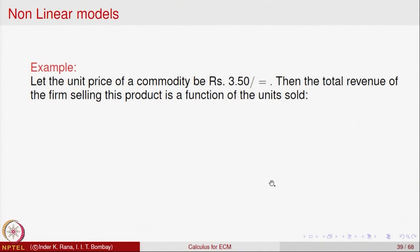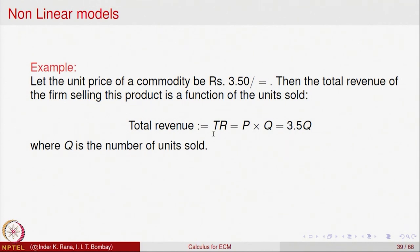Let us now look at some non-linear models. Until now we have looked at very simple models of price and demand. Consider a commodity with price per unit of 3.50. If q units are sold, the total revenue of the firm is a function of units sold. Since price per unit is fixed at 3.50, total revenue is 3.5q — a linear function whose graph is a line passing through the origin.